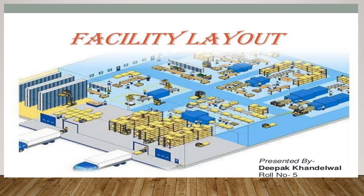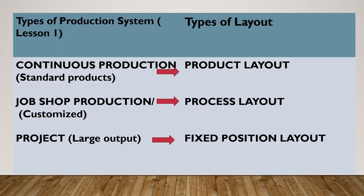Included in process selection is the layout of our facility. The choice of layout will depend on the production system a company is using. Based on our discussion in Lesson 1, we have continuous production, job shop or unit production, and project. The types of layout conducive for those production systems are: product layout, process layout, and fixed position layout.